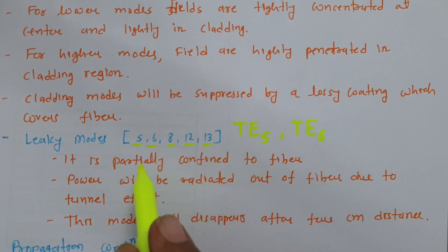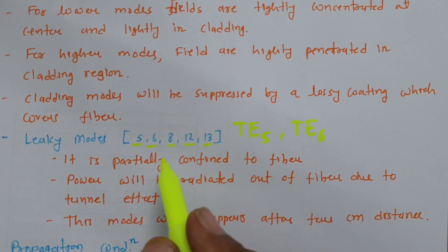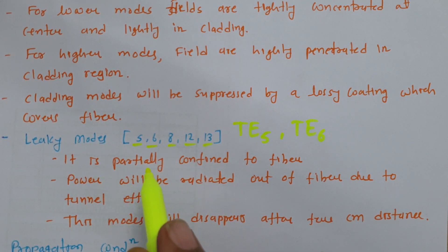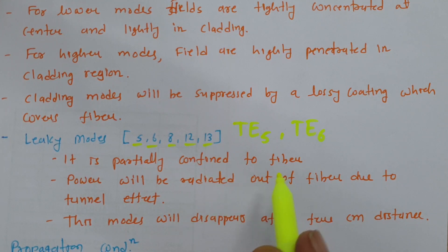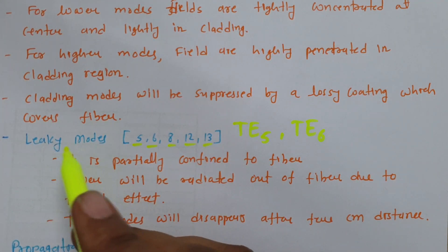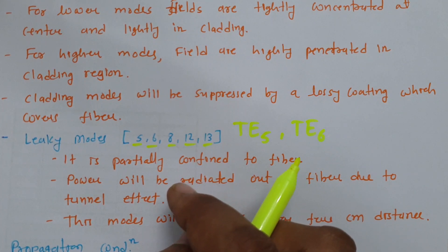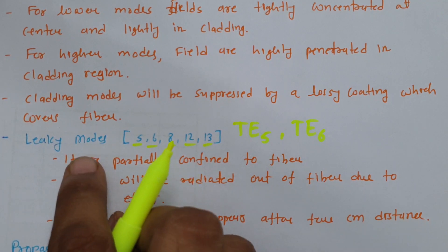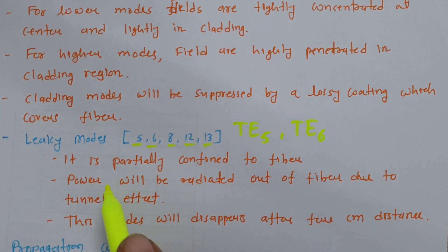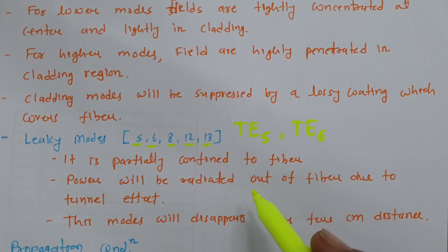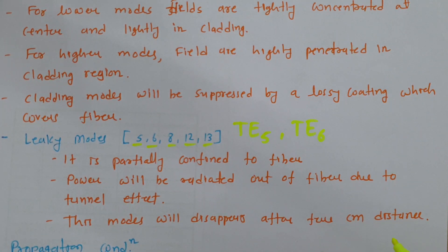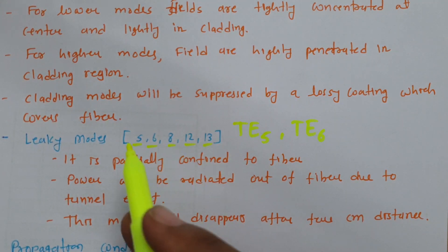In leaky modes, the field will only partially get confined in the fiber. As you increase the order, for leaky modes very little energy gets focused in the core region. Power will be radiated out of the fiber due to the tunneling effect — it will go into the cladding and then exit the fiber. These modes will disappear after a few centimeters of distance.